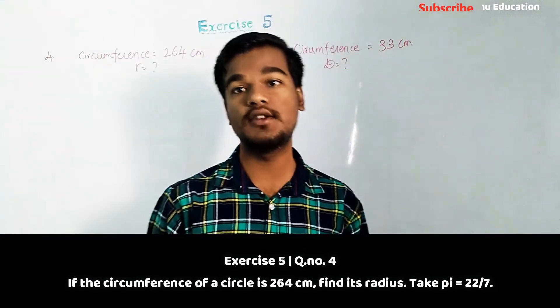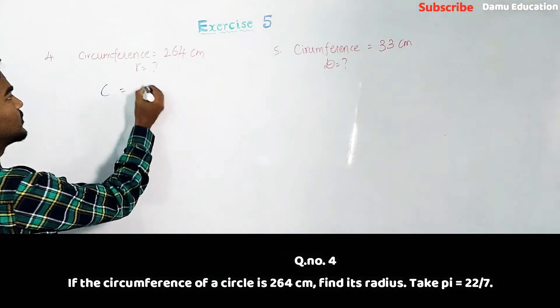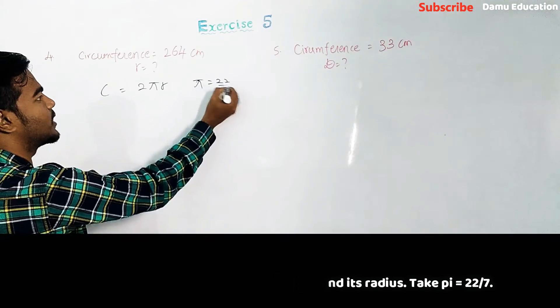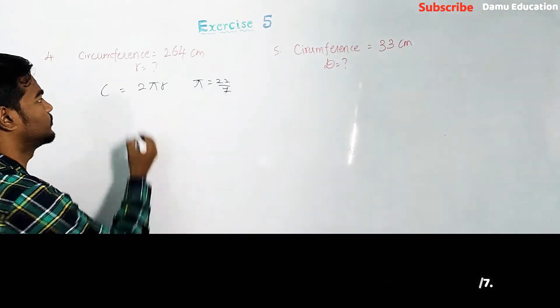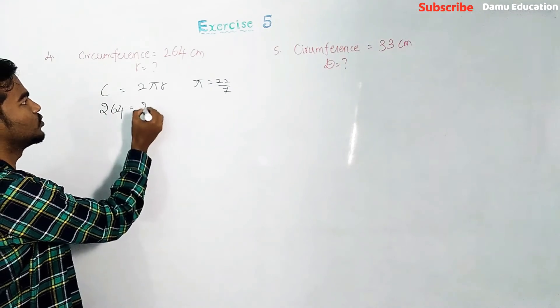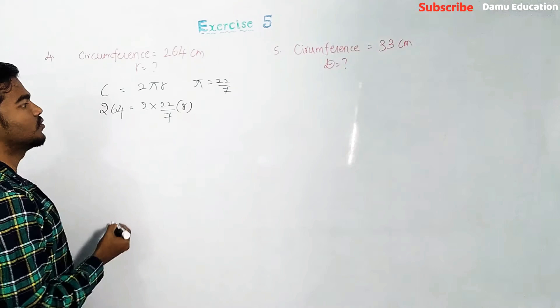So here, circumference is 2πr. Pi equals 22 by 7. Then substitute the circumference 264 centimeter: 2 into 22 by 7 into radius. This is 44 by 7 into radius equals 264.